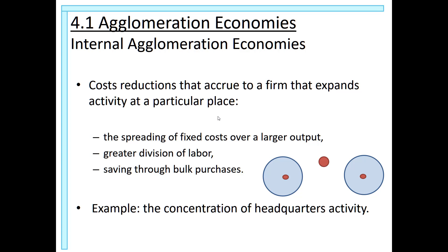There are incentives to being big, called internal economies of scale. We talk about spreading fixed costs over a larger output — our main example was producing an airplane, where the blueprint alone costs $10 billion, so you want to produce more planes to spread out that cost. Also, if you are a bigger plant, there will be a greater division of labor. Hiring 200 employees in one big plant instead of 100 in each of two plants means each employee can specialize more, which tends to increase productivity.